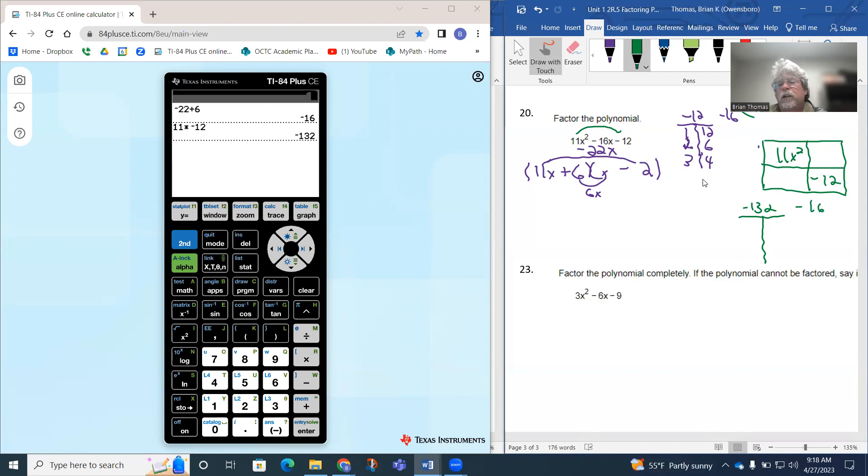So I need my factors of negative 132, or in other words my factors of 132. So again, if you use the y equals button on your calculator, you can type in 132 divided by x and it will make you a table. So if you use y equals, this 132 divided by x, we can use the table on our calculator, make a table for us.